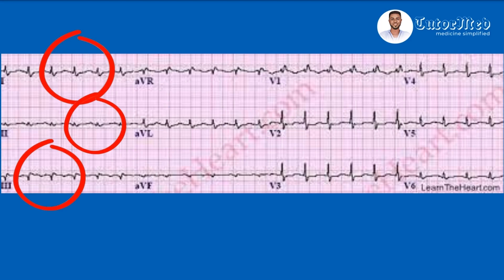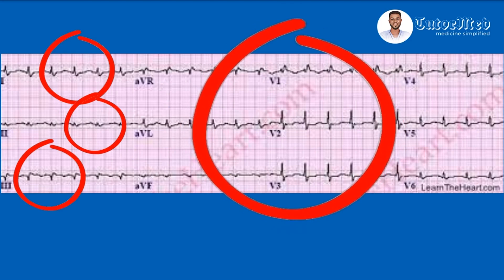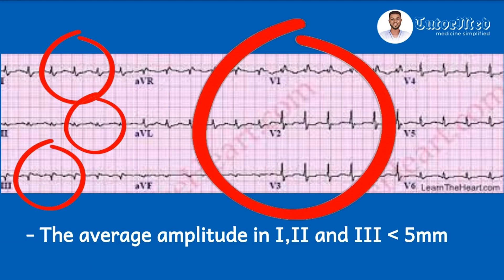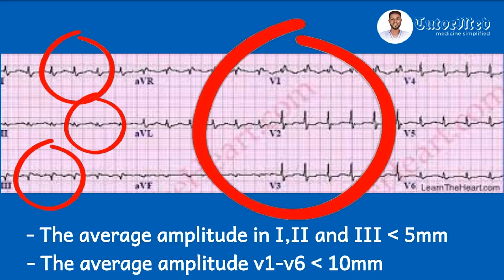Now checking the precordial leads V1 to V6: look at V1 to V3 — none of the QRS complexes occupies two big boxes, which is 10 millimeters. It is the same for V4, V5, and V6. This fits the low voltage criteria using the precordial leads. The average amplitude in leads I, II, and III is less than five millimeters, and the average amplitude in leads V1 to V6 is less than 10 millimeters — confirming this is a low voltage ECG.